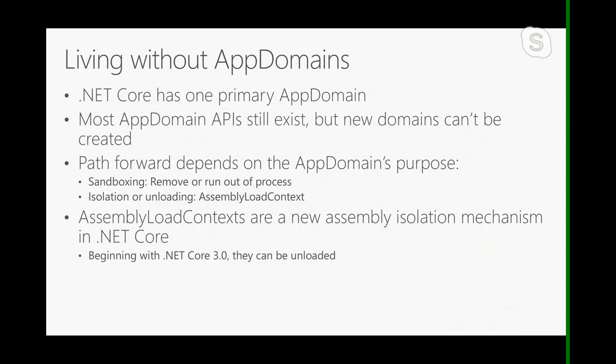The second scenario is if you were using app domains as a way to isolate assemblies and unload them — for example with a plugin architecture where different plugins use different versions of the same assembly. You'd load them in an isolated way so one plugin can use version one and another version two, and when you're done, unload them since assemblies don't unload by themselves but an app domain can be unloaded with all its assemblies. For this scenario, we added an API in .NET Core called AssemblyLoadContext. In .NET Core 3, what's new is that these load contexts can be unloaded. You can have different logical containers loading assemblies in isolation with different versions, and when you're done, unload an AssemblyLoadContext and all its assemblies get unloaded with it.